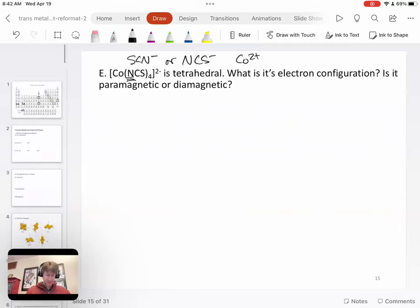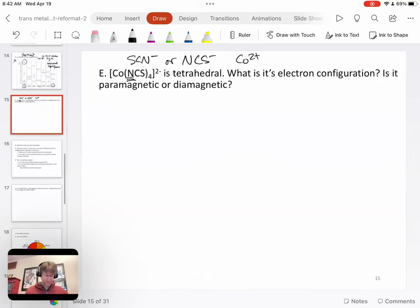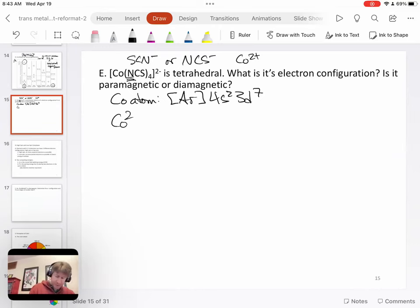Cobalt atom is right here. It has one, two, three, four, five, six, seven electrons. There we go. So cobalt atom is going to be argon, 4S2, 3D seven. Then we have cobalt two plus ion, argon, 3D seven. So we keep those seven 3D electrons.